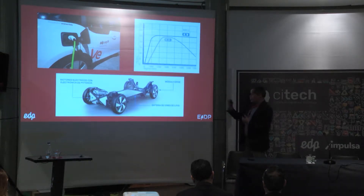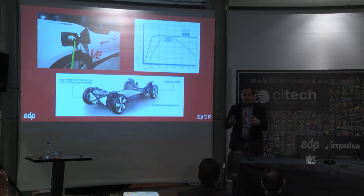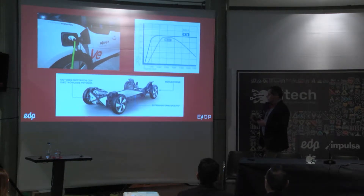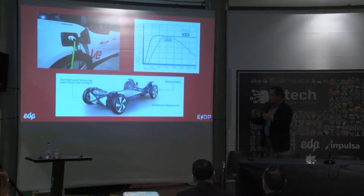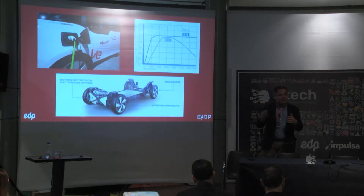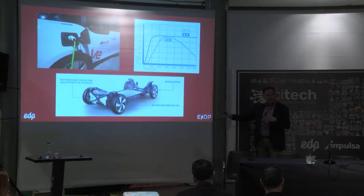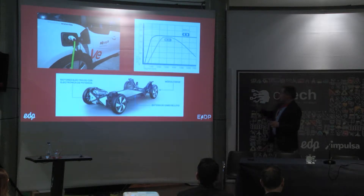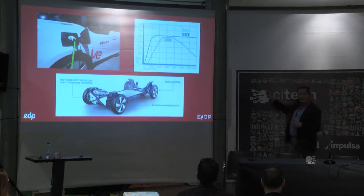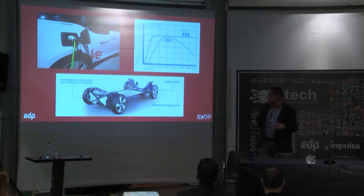Este BMW i3 trae de serie una carrocería en fibra de carbono para, con la misma resistencia mecánica frente a impactos, conseguir aligerar notablemente el peso del coche. El motor se sitúa en la parte de atrás y es un motor eléctrico conocido ya desde la industria desde hace muchos años, con componente electrónica para que el propio motor pueda servir también de generador de electricidad para la batería. La curva de par tradicional se convierte en una recta, obteniendo pares máximos para todo el régimen de funcionamiento. El motor es electrónica pura.